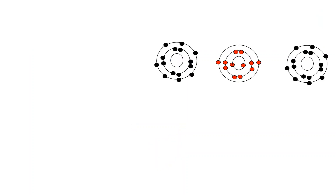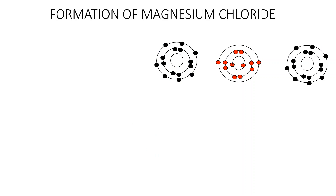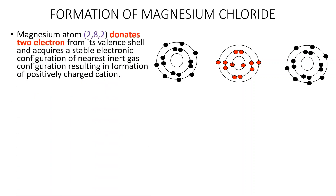Let us now discuss the formation of another ionic compound, magnesium chloride. Magnesium chloride is made up of one atom of magnesium and two atoms of chlorine. Magnesium has got two electrons in its outermost shell and shows a tendency to donate these two electrons, attaining the stable electronic configuration of the nearest zero group, that is neon, resulting in formation of a positively charged magnesium ion.